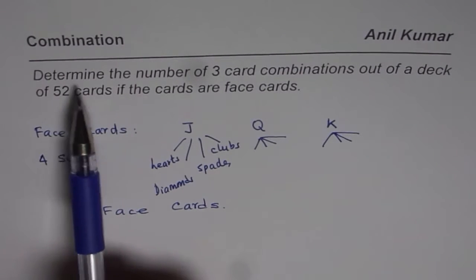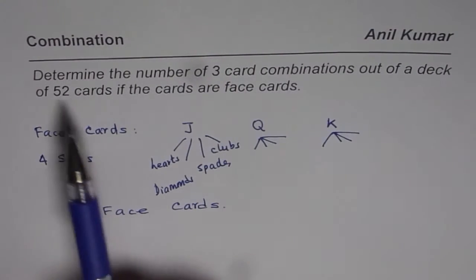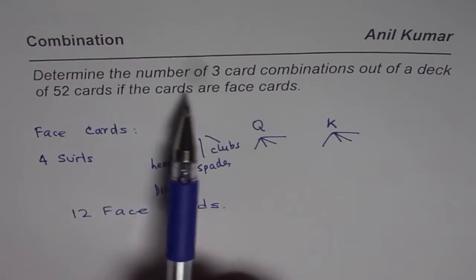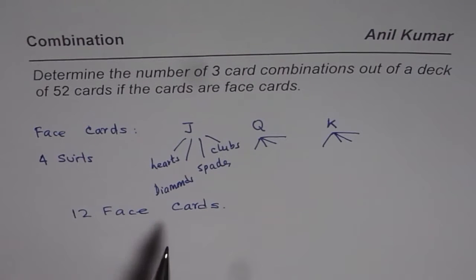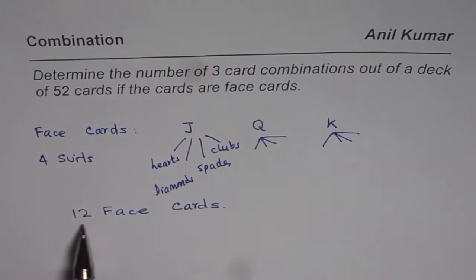Let's read the question. Determine the number of 3 card combinations out of a deck of 52 cards if the cards are face cards. Basically, the question becomes: we need to find number of combinations when we draw 3 cards out of those 12.